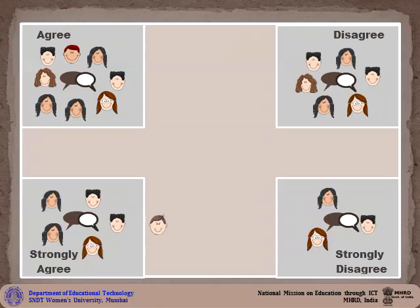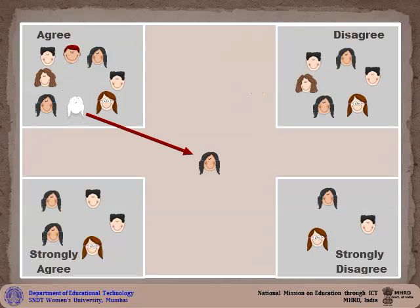While this discussion is taking place, Mr. Bhosle moves around the class towards each corner to observe the discussion taking place. He encourages each student to actively participate in the conversation. After the general discussion in each corner, Mr. Bhosle randomly selects one member from the agree corner to be the spokesperson for the group.